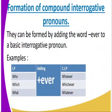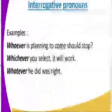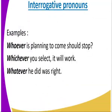Formation of compound interrogative pronouns: they can be formed by adding '-ever' to a basic interrogative pronoun. Who + ever = whoever. Which + ever = whichever. What + ever = whatever. Examples: 'Whoever is planning to come should stop.' 'Whichever you select will still work.' 'Whatever you did was right.' These are examples of compound interrogative pronouns.